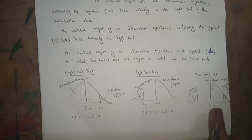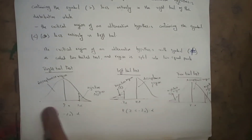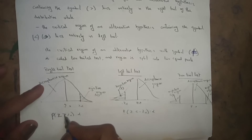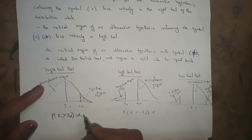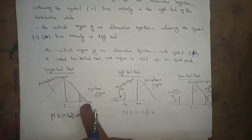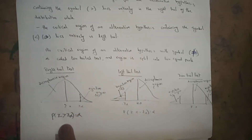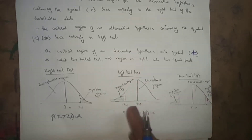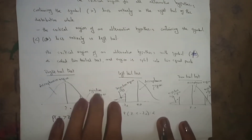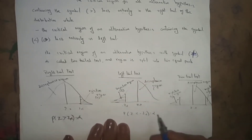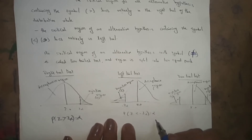For the right-tailed test: on the bell-shaped curve, P(Z > Z_alpha) = alpha. The critical region lies entirely on the right side. For the left-tailed test: on the bell-shaped curve, P(Z < −Z_alpha) = alpha. The rejected region lies entirely on the left side, and the accepted region is to the right.